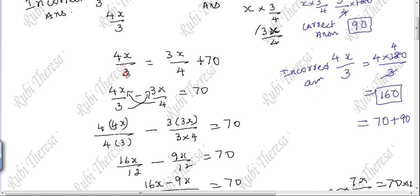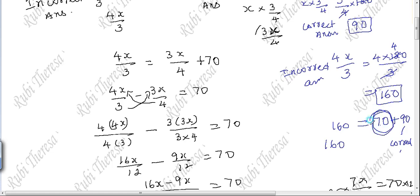4x/3 equals 3x/4 plus 70. The incorrect answer 160 is nothing but the correct answer 90 with 70 excess — that is 70 more. This is the verification. But in the exam it is not compulsory to do this.